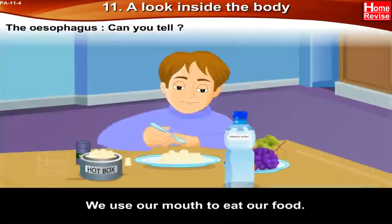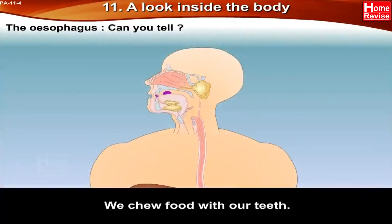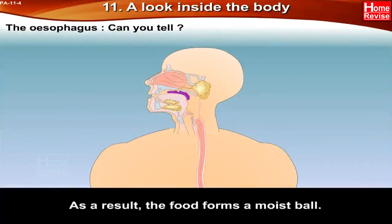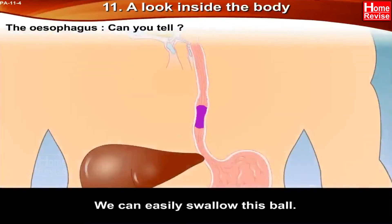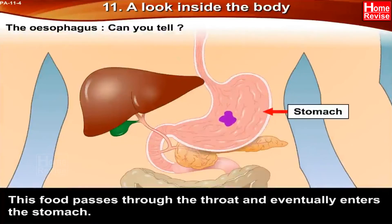We use our mouth to eat our food. The tongue tells us the taste of the food, and we chew food with our teeth. As we chew, our saliva mixes with the food and the food forms a moist ball. We can easily swallow this ball. The food then passes through the throat and eventually enters the stomach.